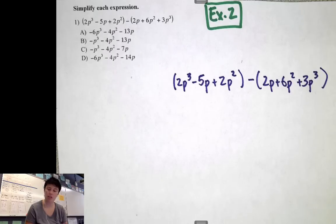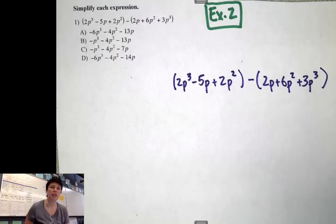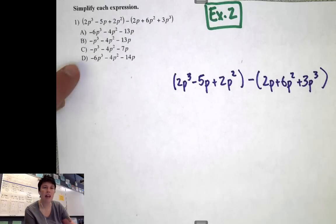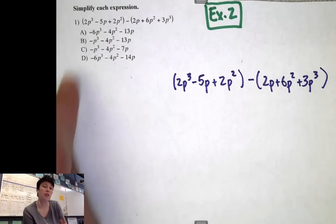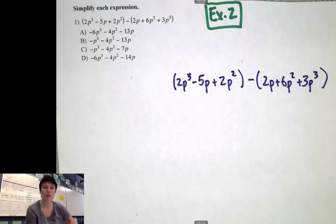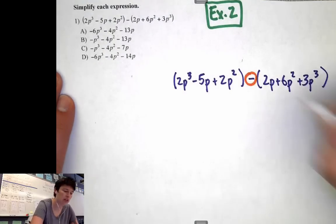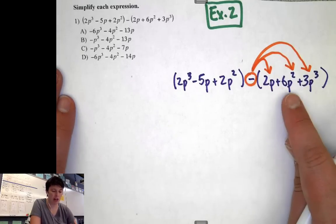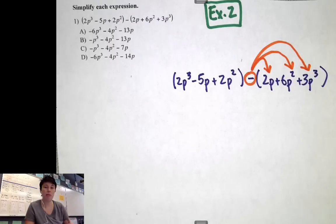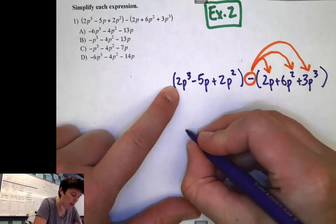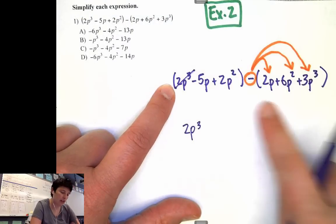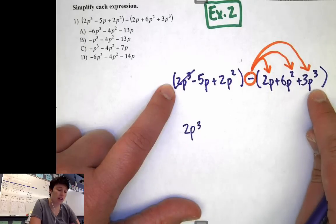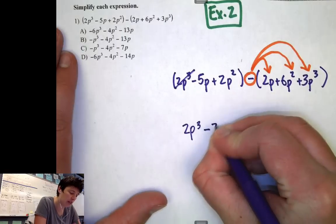If it's a test or certification that you care about, slow down and double check, because these answer choices are purposely going to have mistakes in them. They pick ABCDs with easy errors you could make, so if you miscopy, you might see your answer in one of those choices and fall for the trick. Now, since it's a subtraction problem, we're going to distribute the subtraction sign into the parenthesis — so we're actually subtracting 2p, subtracting 6p squared, and subtracting 3p to the third.